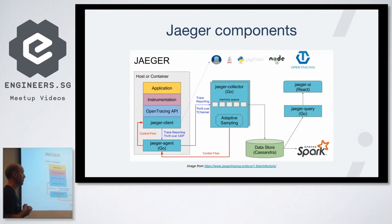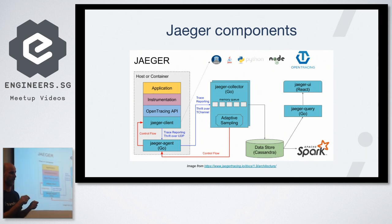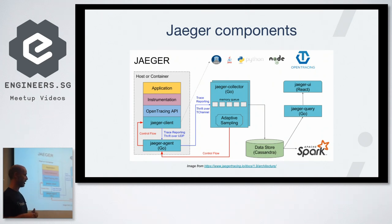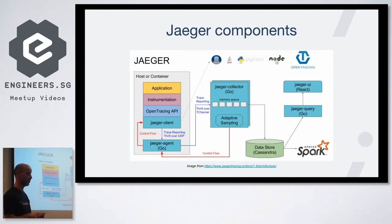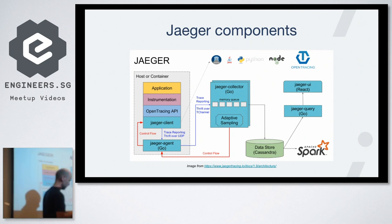Let me talk briefly about Jaeger's components. In your application you need to instrument it — same concept as logging. You add metadata using Jaeger clients, which depend on your language — Java, Go, or whatever. This client sends tracing information to a network daemon called the Jaeger agent, which sends it to the collector. The collector does transformation and indexing before storing it in a data store like Cassandra, and you can then view traces and spans in a UI.